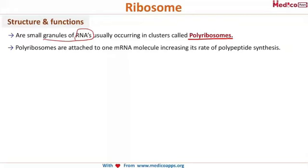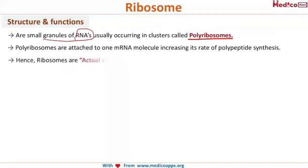Polyribosomes are attached to one mRNA molecule and it increases the rate of polypeptide, or protein, synthesis. So we can understand that ribosomes are the actual site of protein synthesis. However, there are two types of ribosomes that you will have to remember.